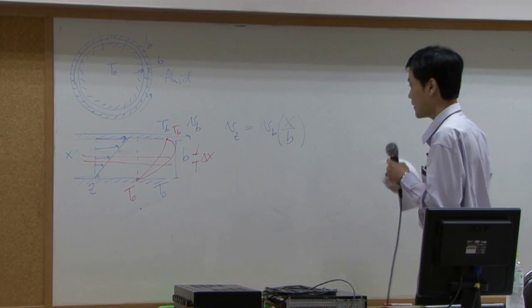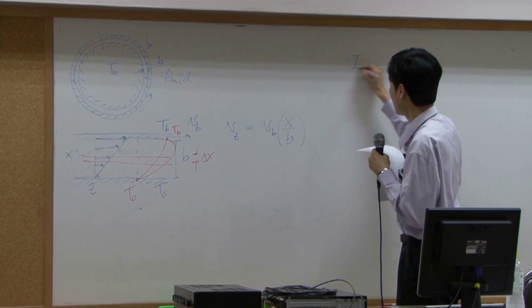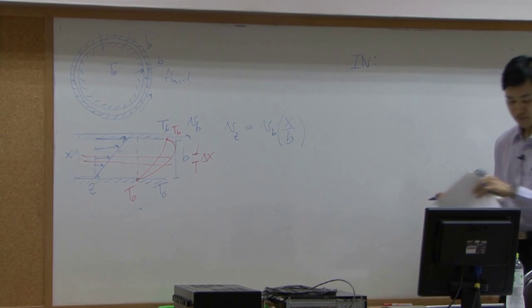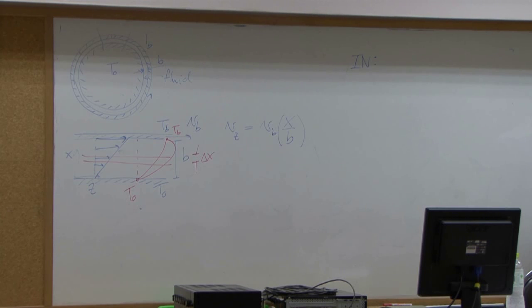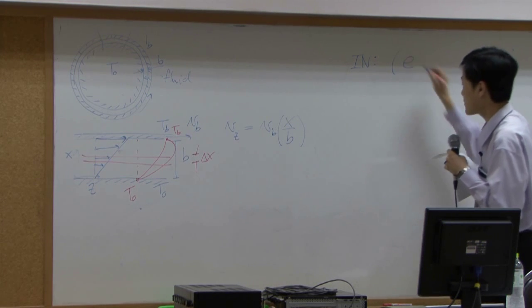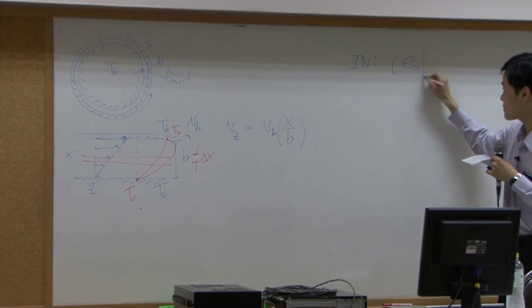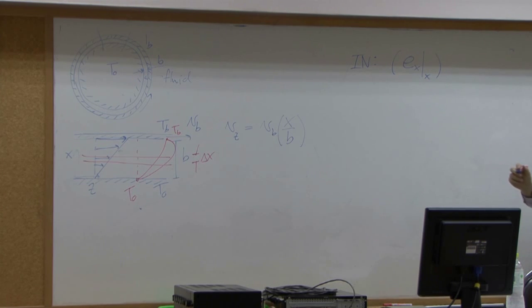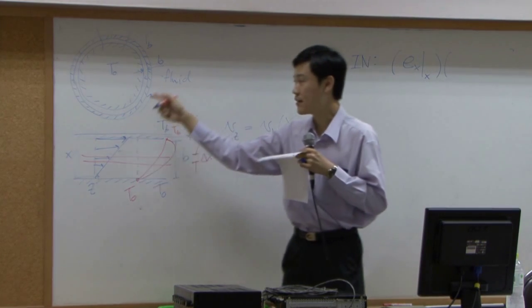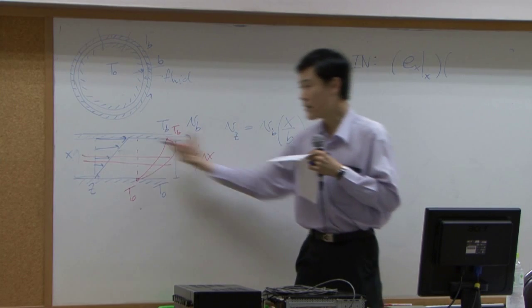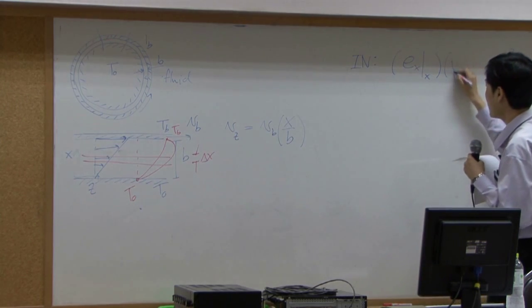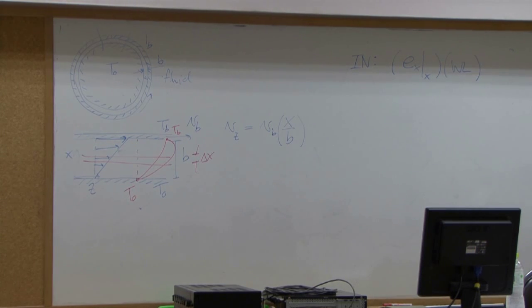So if I have shell like this, what is my input? That's supposed to be flux. In which direction? In x direction. So that's ex at x multiplying by area perpendicular to it. The area, suppose my rod here has length l and width here w. So the area would be wl. For output, it will be the same.